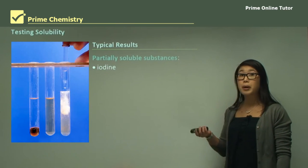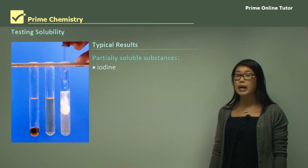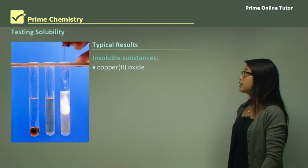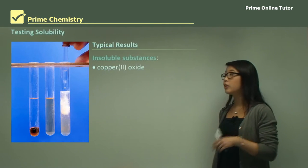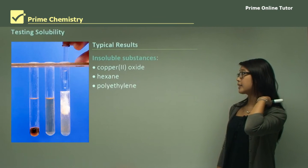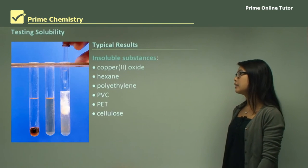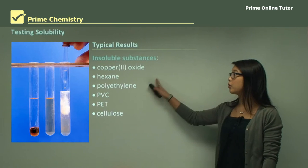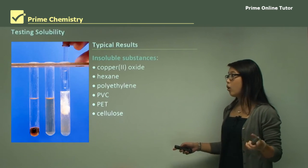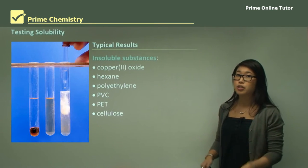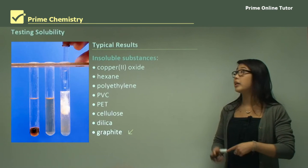Some of them are going to be partially soluble, not fully like the other ones, and this includes iodine. But some are insoluble, and that's going to be copper oxide, hexane, polyethylene, PVC, PET, and cellulose. All these are going to be insoluble, so they're going to form either a precipitate or they're just going to sink to the bottom and nothing's going to change. Silica as well as graphite will be insoluble.